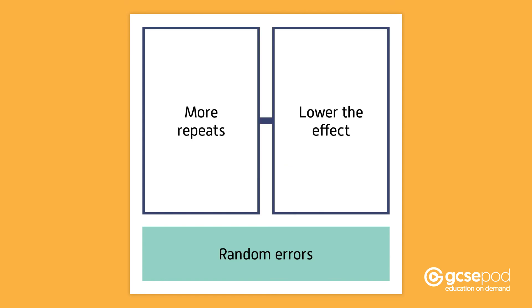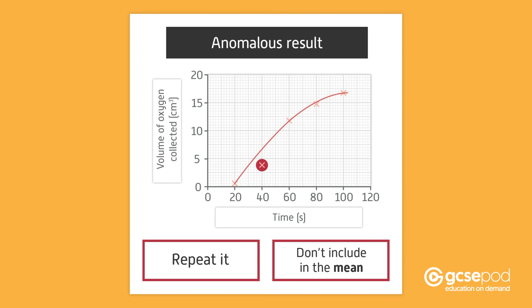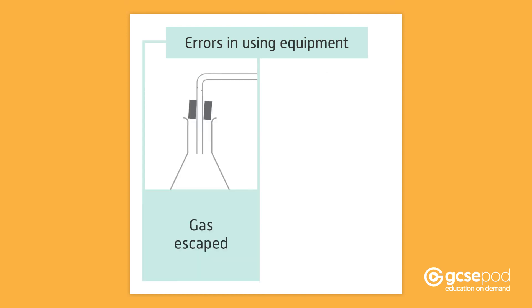If there is one result that looks very different to the others, this is called an anomalous result. It's a good idea to repeat it or, if you can't, then don't include it in the mean. Anomalous results are normally due to errors in using the equipment correctly. For example, the bung might not have sealed properly so some gas escaped, or the delivery tube moved away from the bottom of the measuring cylinder so not all the gas was collected.